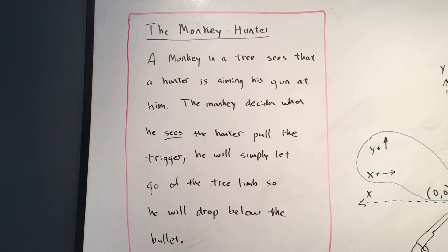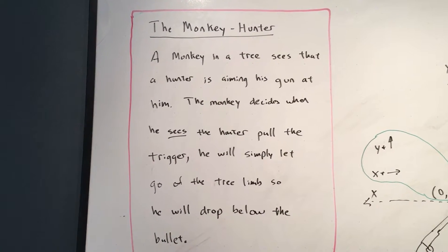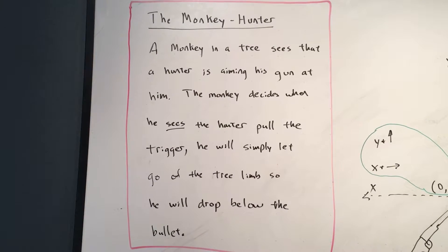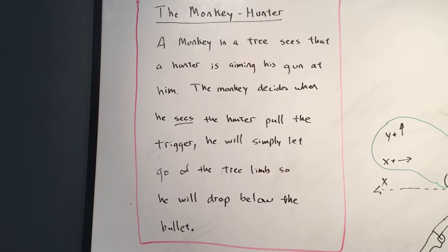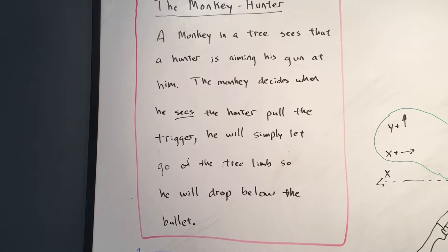So there's a monkey in a tree that sees that a hunter is aiming his gun at him. The monkey decides when he sees the hunter pull the trigger, he'll simply let go of the tree limb so that he'll drop below the bullet.